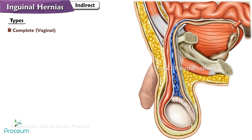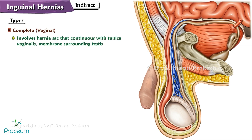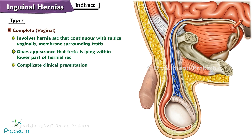Complete Vaginal Indirect Inguinal Hernia: This type of indirect inguinal hernia involves a hernia sac that is continuous with the tunica vaginalis, the membrane surrounding the testis. It gives the appearance that the testis is lying within the lower part of the hernial sac. This can complicate the clinical presentation, as it may be difficult to differentiate the hernia from the testis itself.